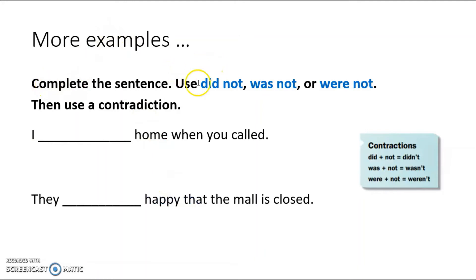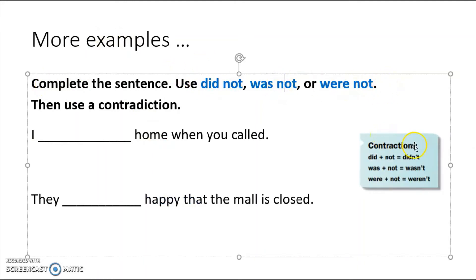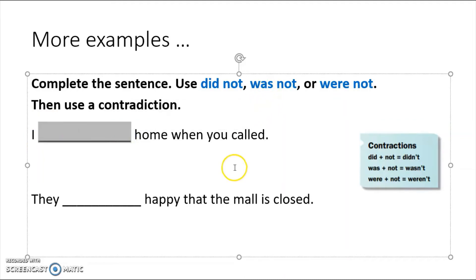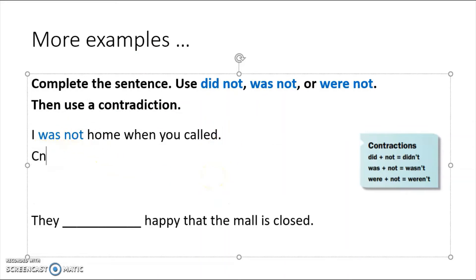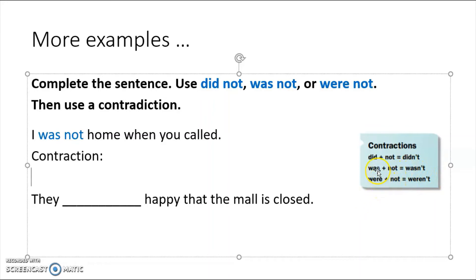More examples — we're only using 'did not,' 'was not,' or 'were not,' then combine them into a contraction. 'I blank home when you called' — I'm one person, so: I was not home when you called. Now the contraction — 'was not' becomes 'wasn't.' I wasn't home when you called.